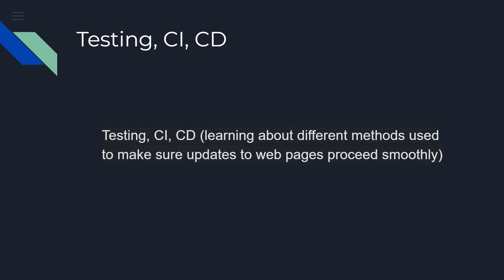CI/CD — we're going to learn what it means: continuous integration and continuous development. When you make updates, the update runs smoothly. You've seen on your phone where it says 'updates — do you want to update, do you want to restart your phone?' Those applications go through CI and CD.